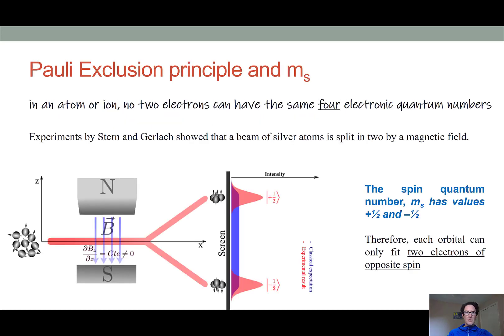So let's begin by discussing the Pauli exclusion principle. This principle states that within an atom or ion, no two electrons can have the same four electronic quantum numbers. Well, up until this point, we've only talked about three quantum numbers: the principal quantum number n, the principal shell number l, and the subshell value or the angular momentum value m sub l. Well, now I'm introducing the fourth quantum number, and that is given the name m sub s, or the spin quantum number.